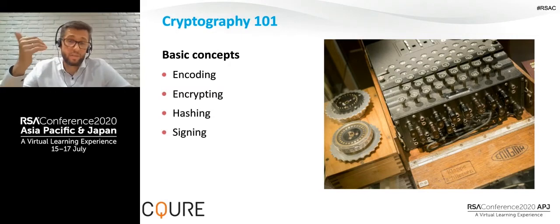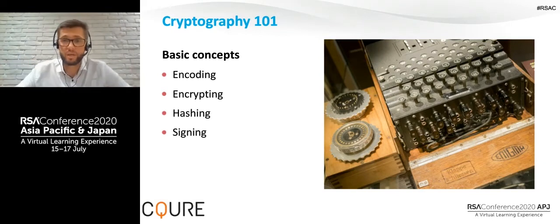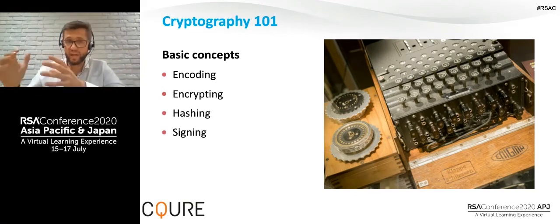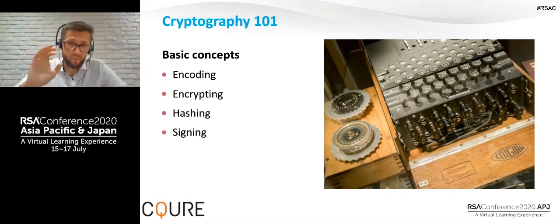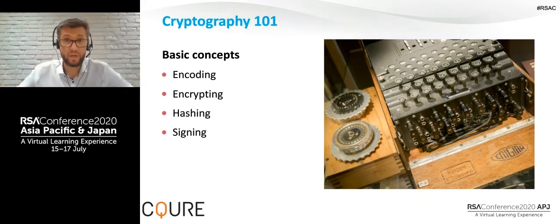Other concepts include hashing — its purpose is to ensure integrity of messages so we can easily check if a message was changed. We use algorithms like MD5, SHA1, and SHA256. Importantly, hashing is a one-way function: from the message you can get the hash, but not the other way around. Finally, signing is a critical concept for authentication — it proves who is the author of a message. We calculate the hash and encrypt it with the private key. A common example is SHA256 with RSA.